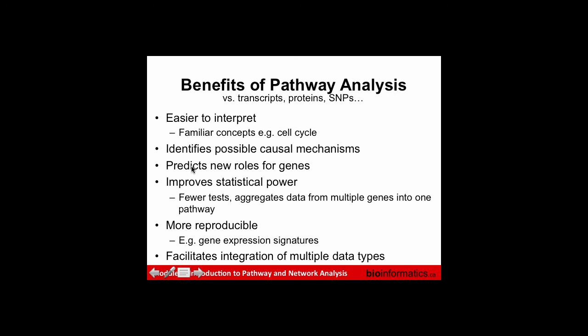To summarize the benefits of pathway analysis versus analyzing data transcript by transcript or SNP by SNP: it's easier to interpret because it works with familiar biological concepts; it identifies possible causal mechanisms; it can predict new roles for genes when an unknown gene acts similarly to others in the same pathway; and it improves statistical power. When you have thousands or millions of elements — like millions of SNPs in GWAS — each requiring its own test, working at the pathway level means far fewer tests, reducing the multiple testing correction problem. It also aggregates data from multiple genes into one pathway.